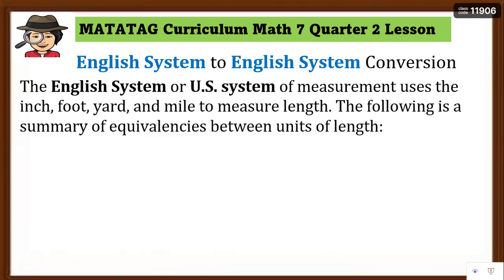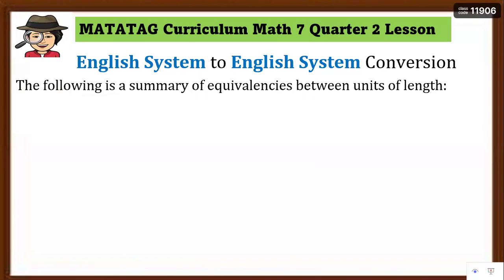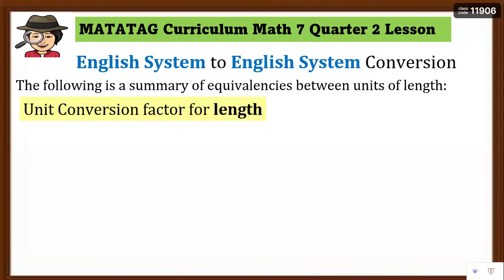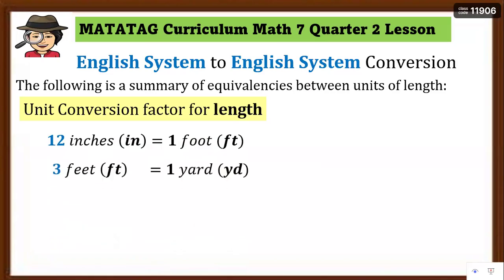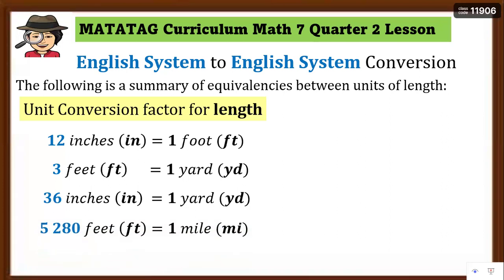First, let's define the English system, also called the US system of measurement. It uses the inch, foot, yard, and mile to measure length. Remember, length is the distance from end to end. Here is a summary of equivalences between units of length: 12 inches is equal to 1 foot — that's one ruler. 3 feet is equal to 1 yard — that's three rulers. 36 inches is equal to 1 yard. And 5,280 feet is equal to 1 mile, used when the length is very long.